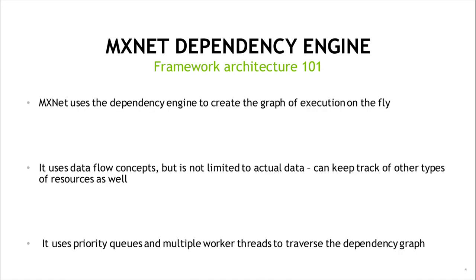This is the approach taken by MXNet's engine. It computes the lightweight dependency graph on the fly from the imperative code by tagging each resource used by the operation as either mutated by the operation or just read by it. Therefore it uses concepts of the data flow but is not actually limited to tensors with data. Other resources like random number generators or workspace are also scheduled the same way. Finally, it uses a priority queue and multiple pools of worker threads, one pool per device, to effectively traverse this dependency graph.